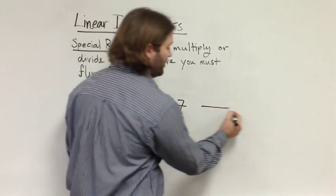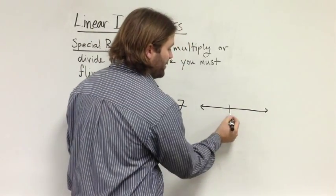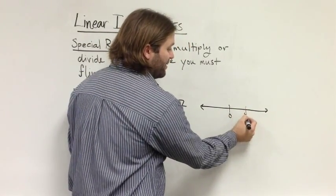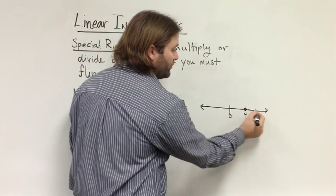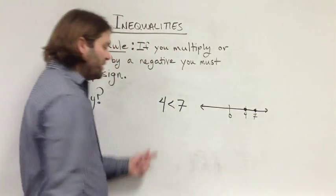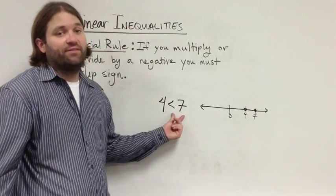If we were to look at this on a number line, if here is 0, we could say that here is 4 and here is 7. And clearly, since 4 is to the left of 7, we see that 4 definitely is less than 7.